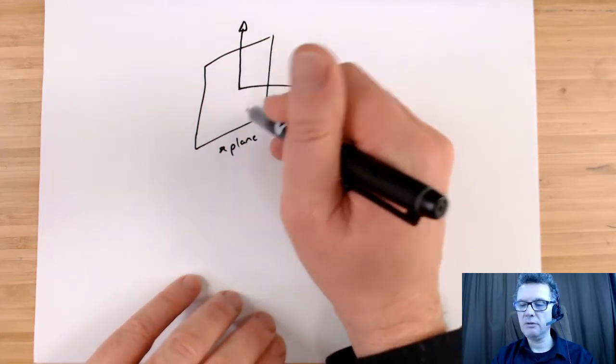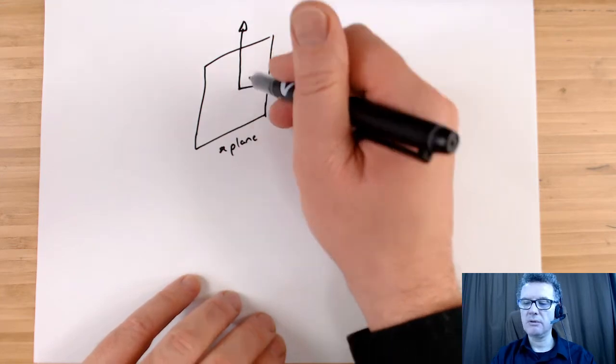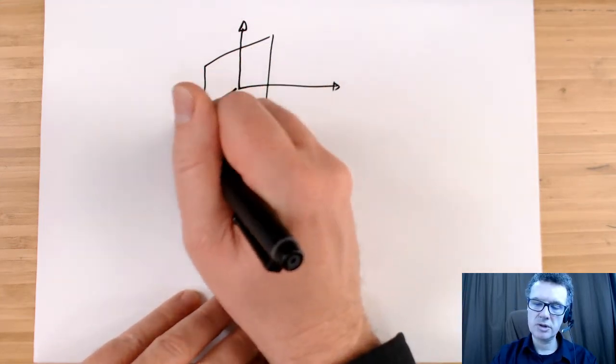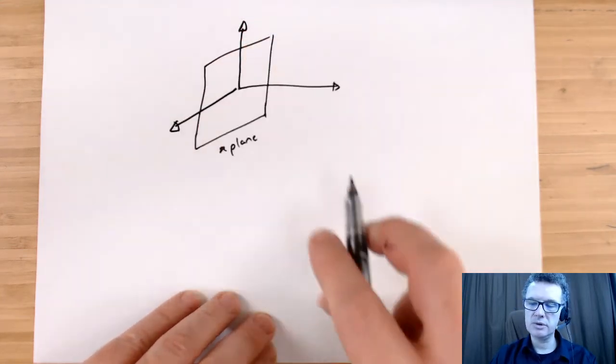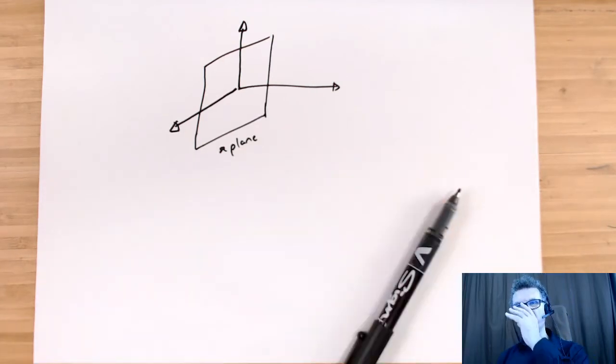So since we're working in three dimensions, we could have a shear stress going off in that direction, or we could have a shear stress coming out towards us. We labeled those directions correctly.